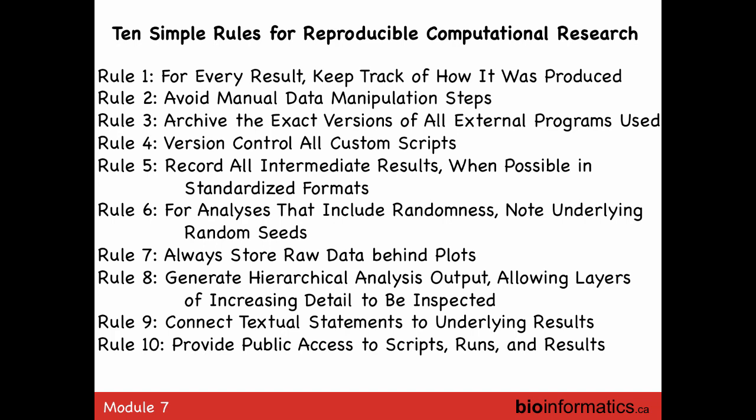The most important rule is to provide public access to scripts, runs, and results. If somebody reads your paper and you've detailed all this information, they will be able to reproduce your experiment because they'll have all the reagents and everything you used. The same way you describe which vendor supplied a restriction enzyme or which cell line you used, you have to put those same kinds of details around software as well.